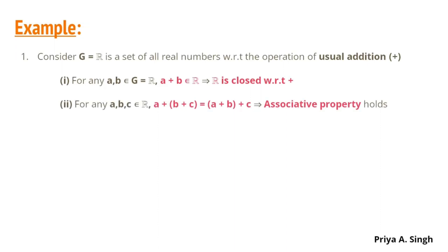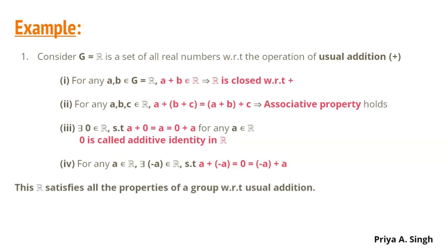If we consider any three real numbers, then the associative property also holds. There exists a number 0 in real numbers such that A plus 0 equals A and 0 plus A also equals A, where A is any element in the set of real numbers. Thus, 0 is called the identity in the set of real numbers R. Now, for any element in real numbers, there exists an element minus A in R such that A plus minus A equals 0 and also minus A plus A gives you 0. Thus, this set of real numbers R satisfies all the properties of group with respect to the usual addition. Hence, we can say that the set of real numbers is a group with respect to addition.